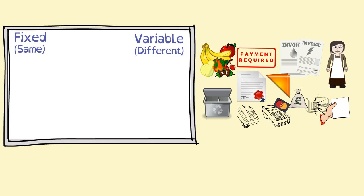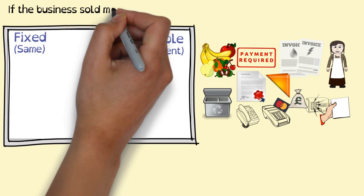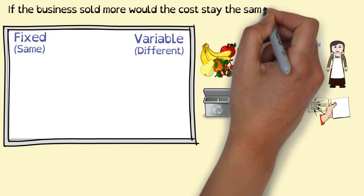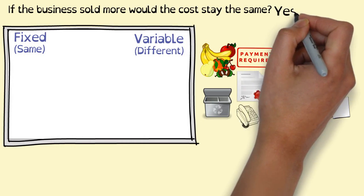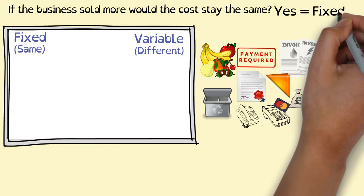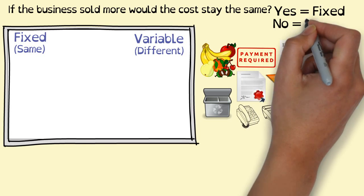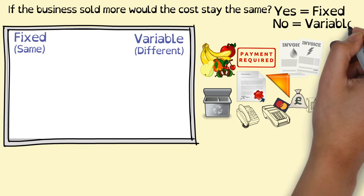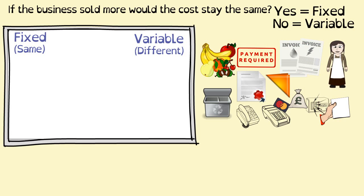So the question to ask yourself is: if the business sold more, would that running cost stay the same? If the answer is yes, the cost would stay the same, it would be identified as a fixed cost. If the answer is no, the cost would be different every time we paid for them, it would be a variable cost.